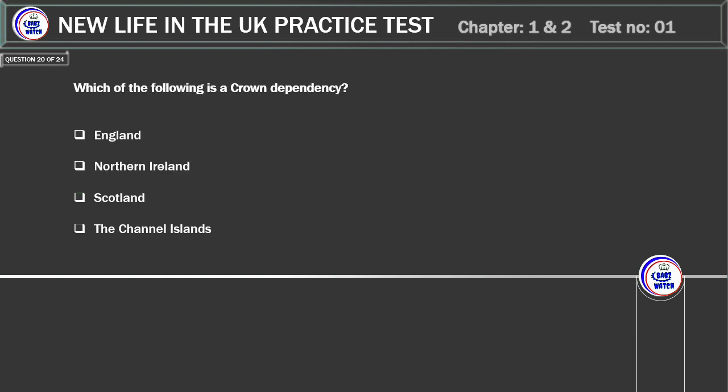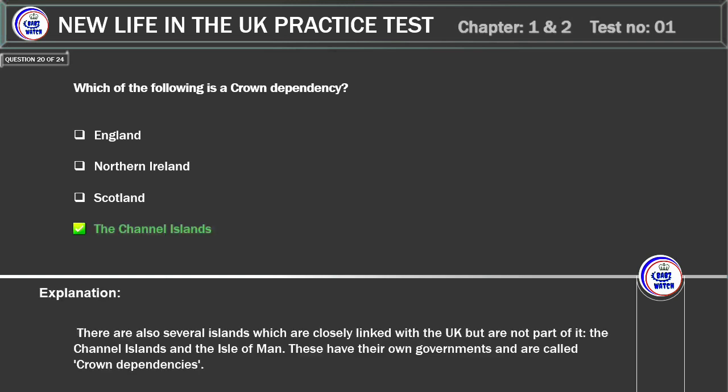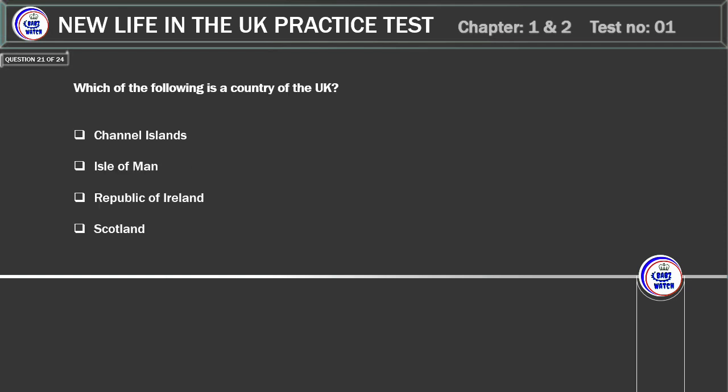Which of the following is a crown dependency? England. Northern Ireland. Scotland. The Channel Islands. Correct answer: the Channel Islands. Explanation: there are also several islands which are closely linked with the UK but are not part of it — the Channel Islands and the Isle of Man. These have their own governments and are called crown dependencies.